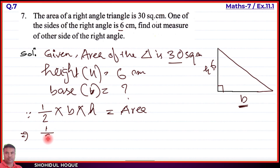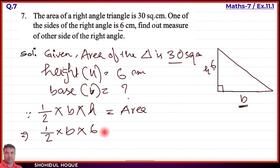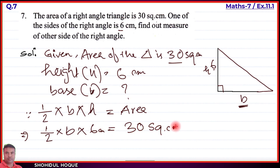We write: one by two into base B, as it is, into H — the height value is 6. This equals the area value, which is 30 square centimeters.